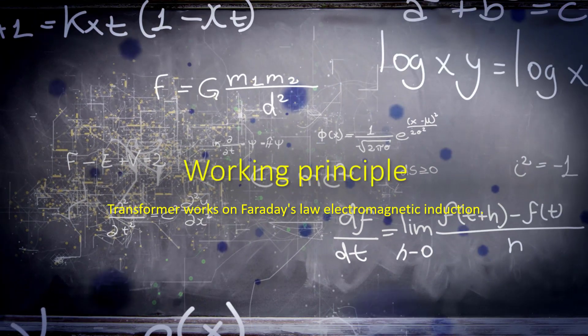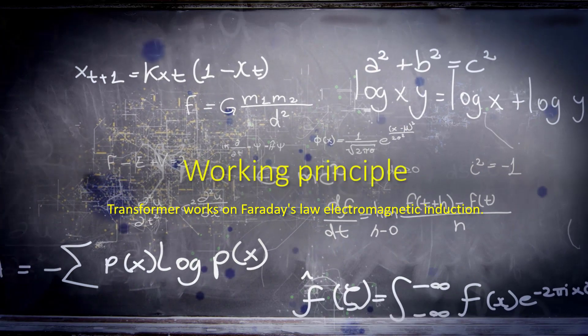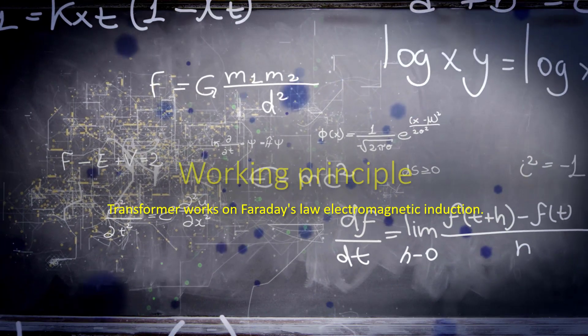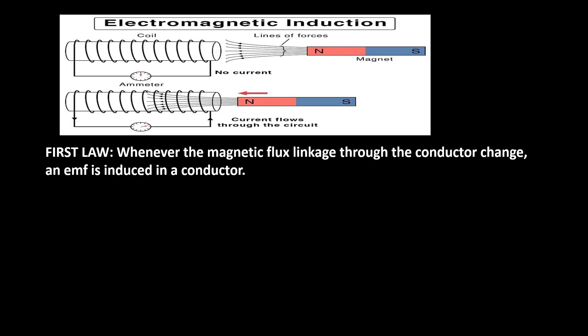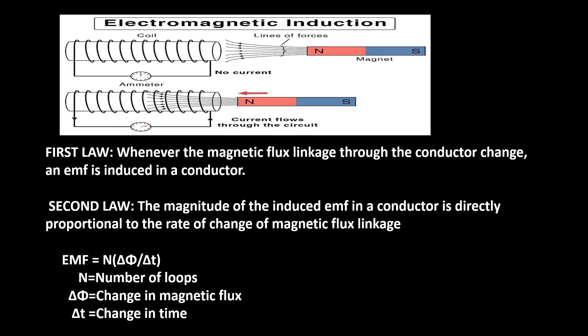How does the transformer work? Transformer works based on Faraday's laws of electromagnetic induction, in terms of mutual induction. Faraday's first law states that whenever a magnetic flux linked through a conductor changes, an EMF is produced in that conductor. Faraday's second law states that the magnitude of induced EMF in a conductor is directly proportional to the rate of change of magnetic flux linkage. Whenever a magnetic field associated with the conductor or coil changes, there will be an induced EMF in it. Based on that, the EMF equation is: V = N × (Δφ/Δt), where N is the number of loops, Δφ is the change in magnetic flux, and Δt is the change in time. If a changing magnetic field is associated with the conductor, there will be an induced EMF — this is the working principle of a transformer.